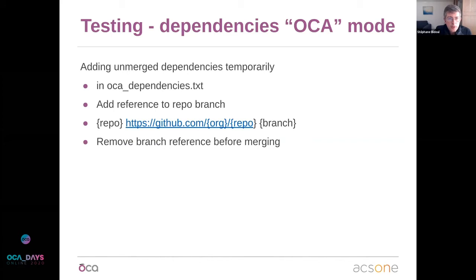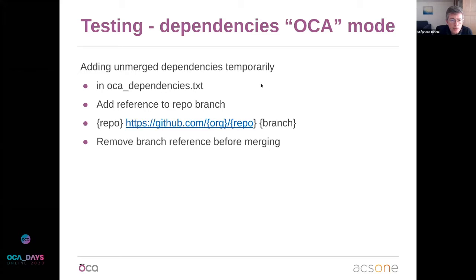There's a feature for pull requests that depend on an unmerged branch: you can add the repo URL and branch name to `oca_dependencies`. Of course, you must remember to remove those references before merging, because you can only merge a module when its dependencies are already merged — otherwise you'll make the main branch red.